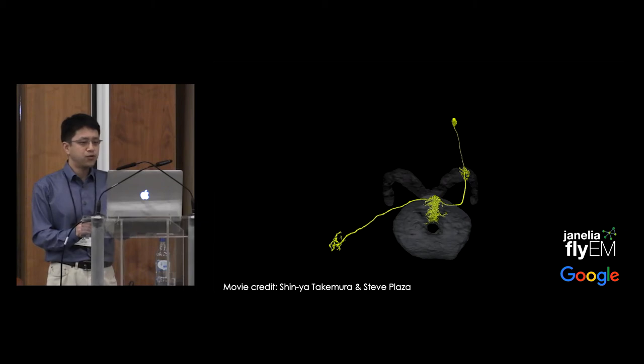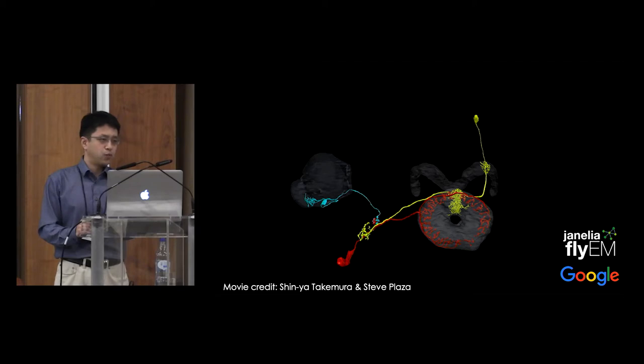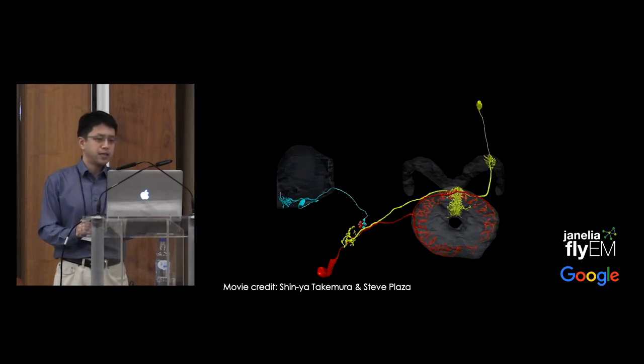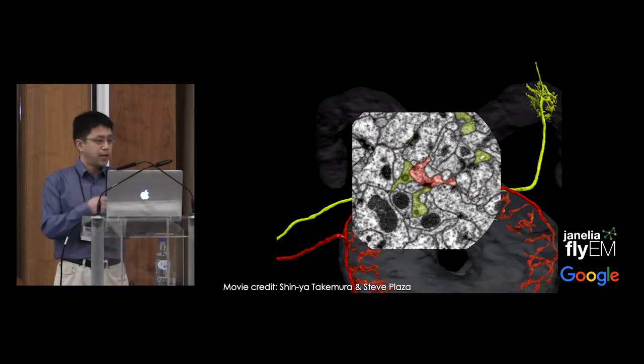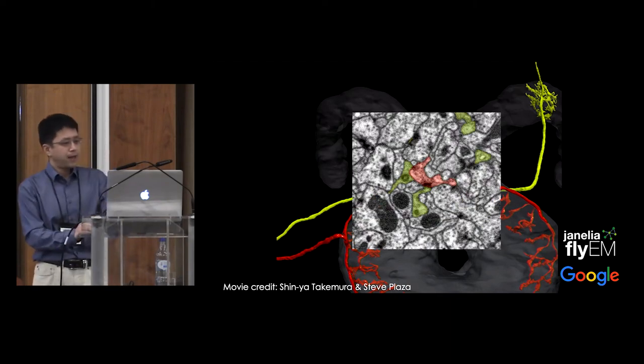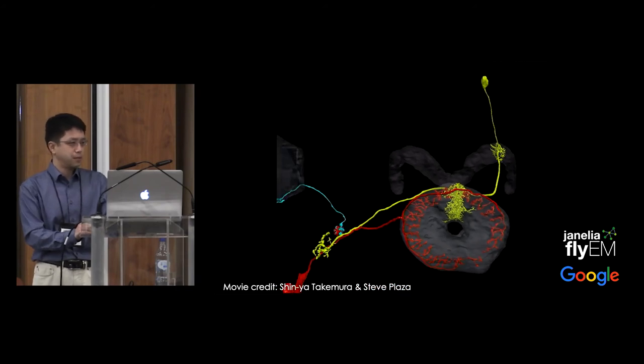What you are seeing is a collection of compass neurons which tile the ellipsoid body. And this yellow neuron is one of them. This red neuron, called a ring neuron, makes direct synaptic contacts with all the compass neurons, not just one, as you have seen here. And this ring neuron is GABAergic and inhibits the post-synaptic compass neurons.